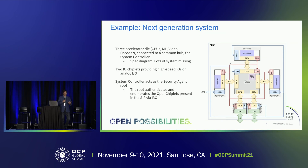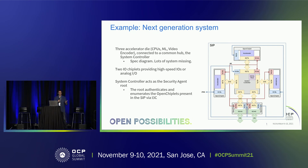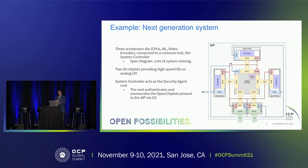If we are successful in making this open chiplet marketplace, there are infinite possibilities for what a next-generation system could look like. This is just a thought experiment — if we had chiplets for SerDes, accelerators, and ML, we could build a system where we mix and match all of these chiplets. You'd have an IO chiplet, an ML chiplet, and a system controller sitting in the middle which authenticates everything. This is very futuristic but certainly in the realm of possibility if we make a chiplet marketplace succeed.